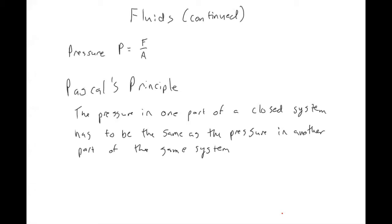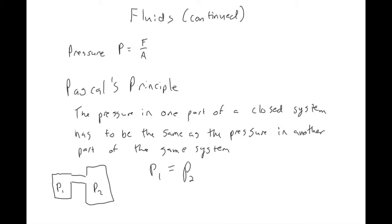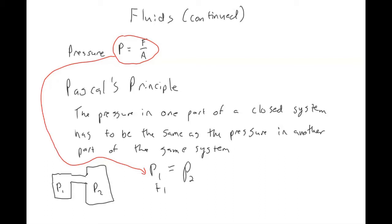The mathematical representation of that is: if you have two different spaces that are connected, then the pressure in one space has to equal the pressure in the other. And because the pressures are the same, if we replace the equation for pressure, that means force one over area one has to equal force two over area two.